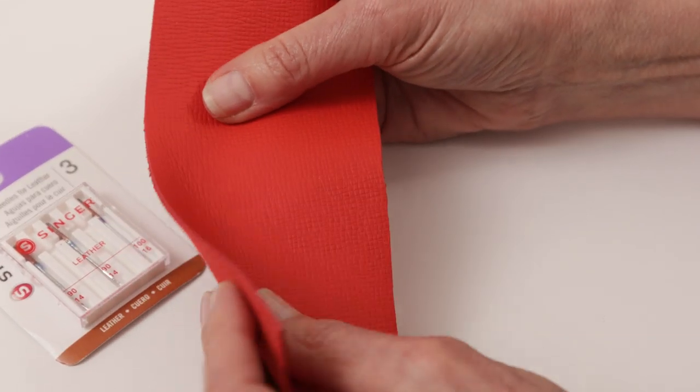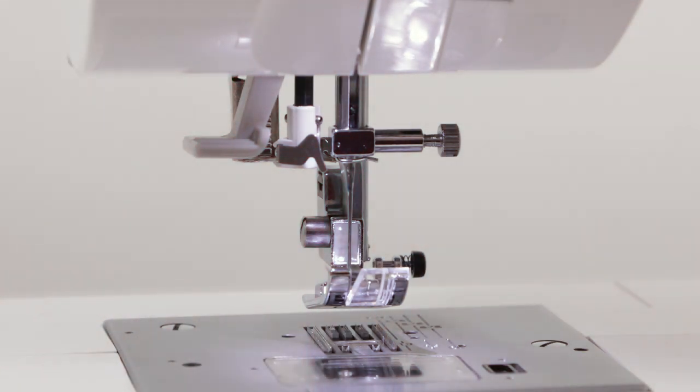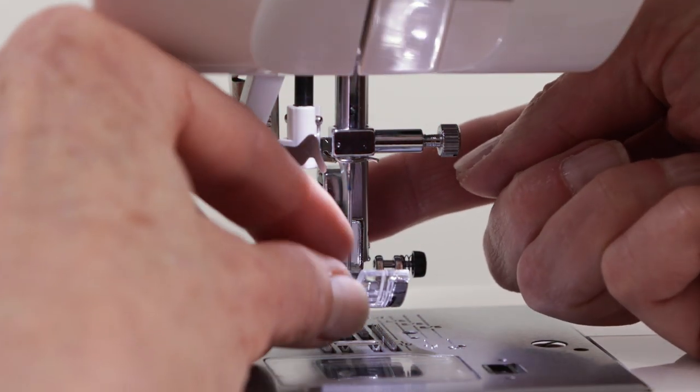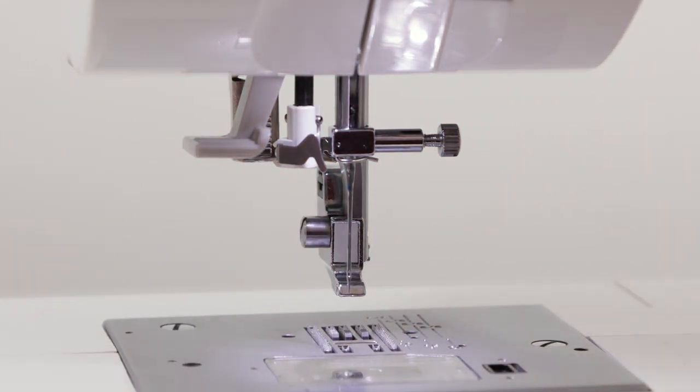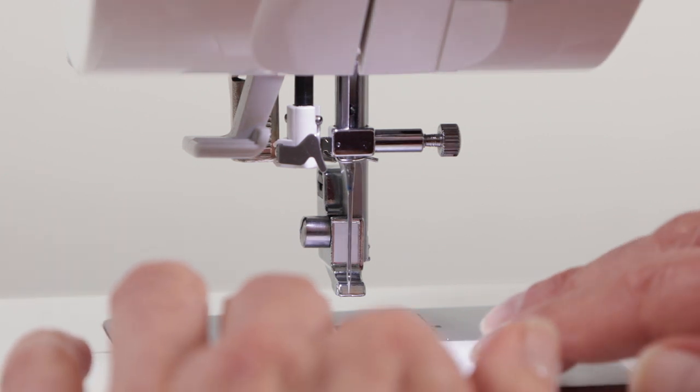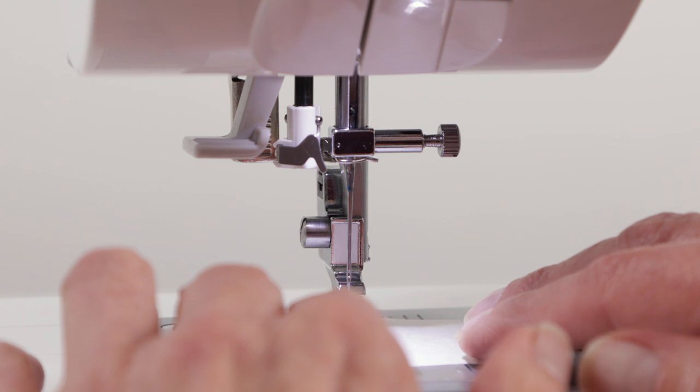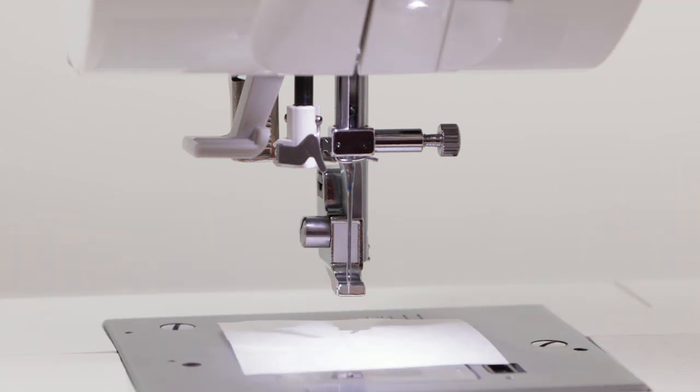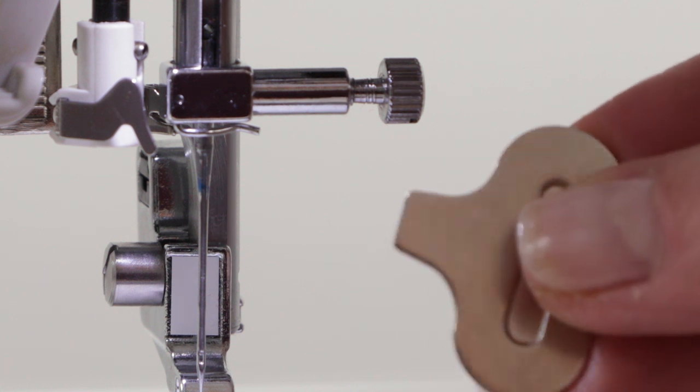To change a needle, you might first want to remove the presser foot just to give you a clearer view of the area. You might also want to place a small piece of paper underneath the needle area so in case you drop the needle you can retrieve it. Get the screwdriver which is located in your removable storage compartment.